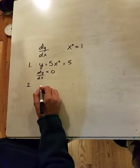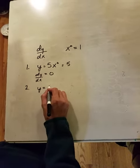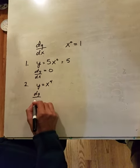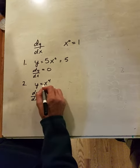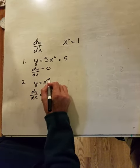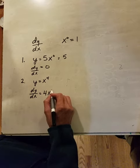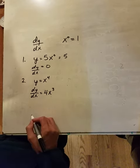On number two, we've got y is equal to x to the 4th. So dy dx. We're going to multiply the coefficient, which is 1, times 4. That'll give us 4, and then we reduce the power by 1. That'll give us 4x to the 3rd.